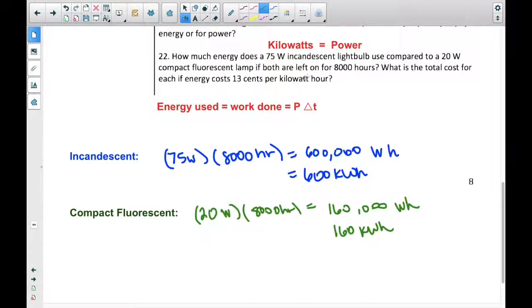Then the question asks, what is the total cost for each if energy costs 13 cents per kilowatt? So in other words, if we take this and we multiply it by 13 cents, how much is that going to cost us? And same thing down here. If we multiply this times 13 cents, how much will that cost us?